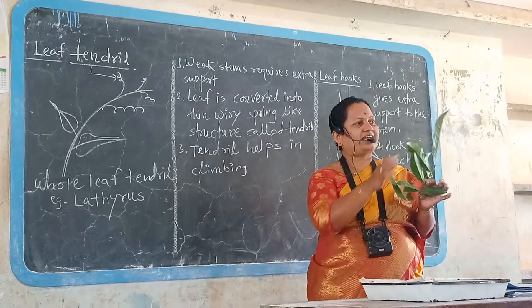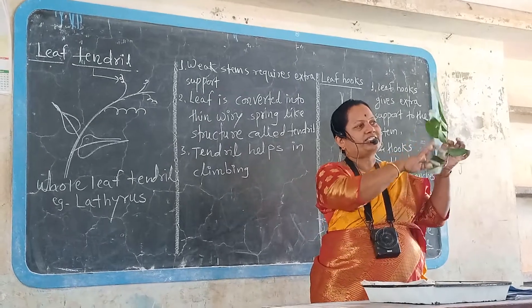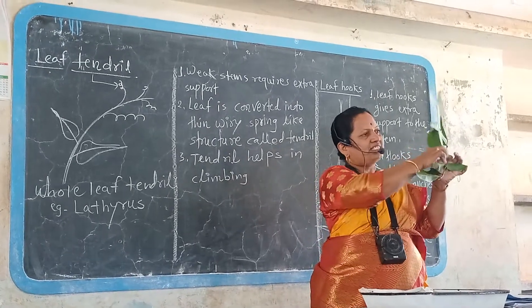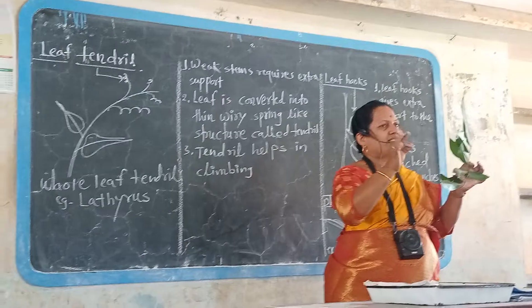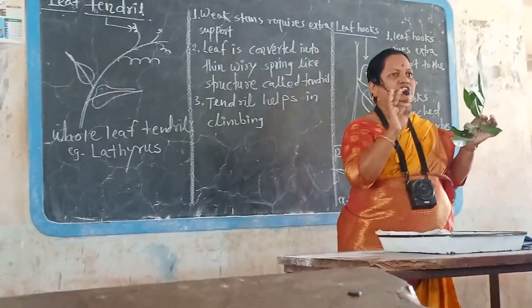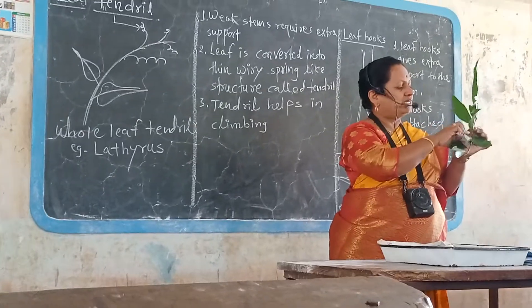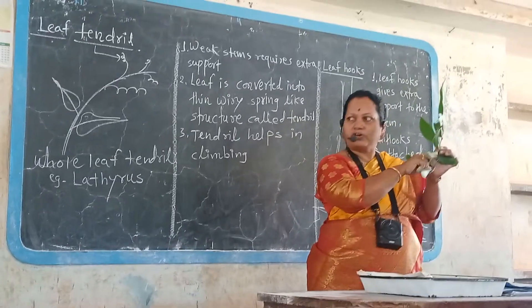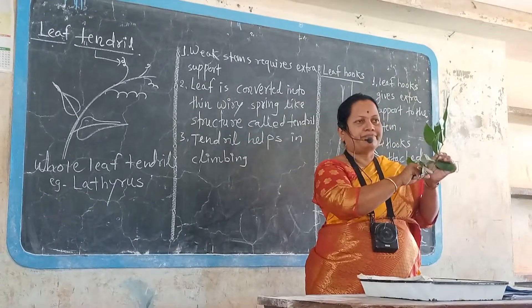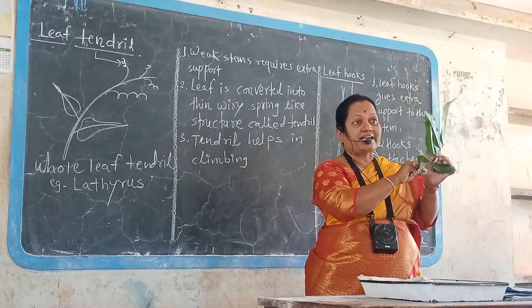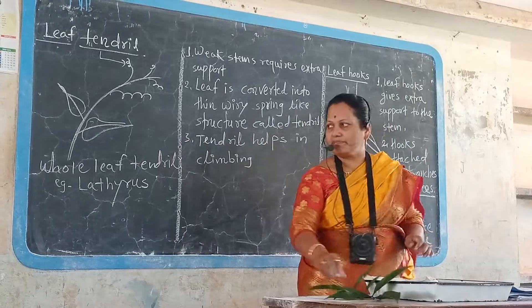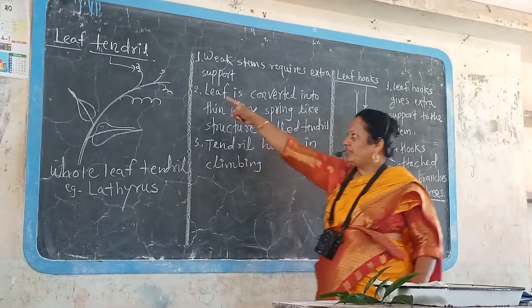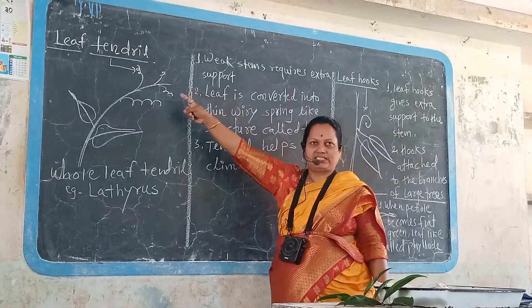If leaves are arranged on the stem, when the stem is weak, at that time extra or additional support is required for the stem, and that extra support is given by the leaf tendrils.